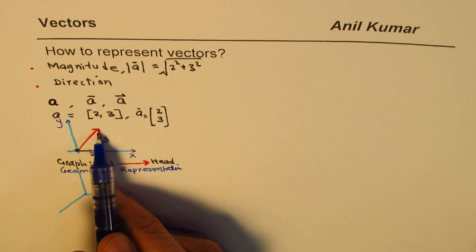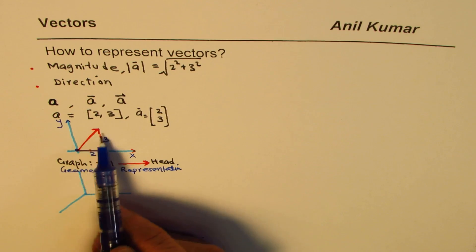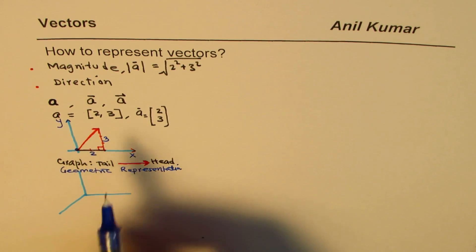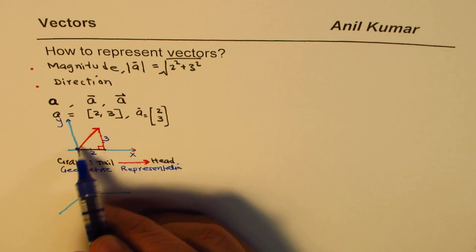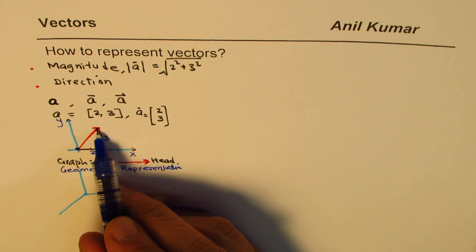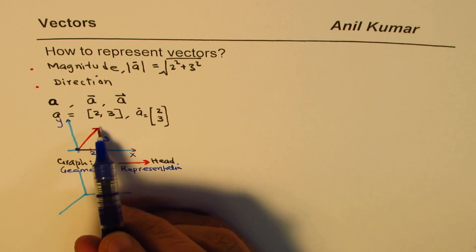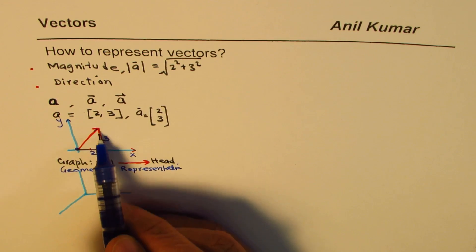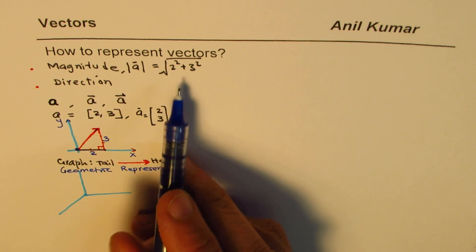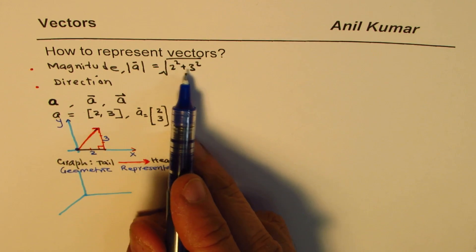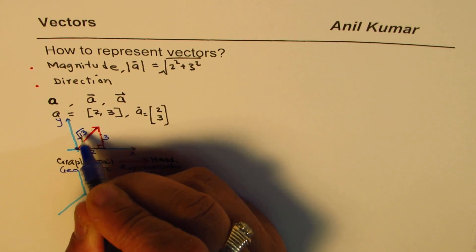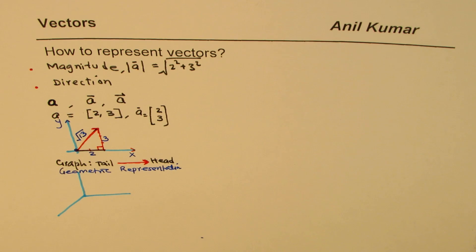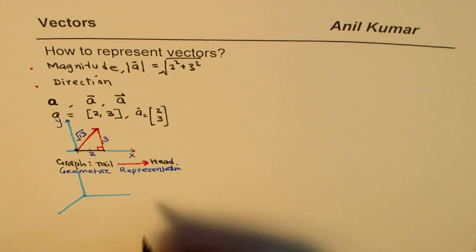In the graph, the length represents the magnitude. The direction components are 2 and 3. So the magnitude is √(4 + 9) = √13. That is how you represent a vector in the XY plane.